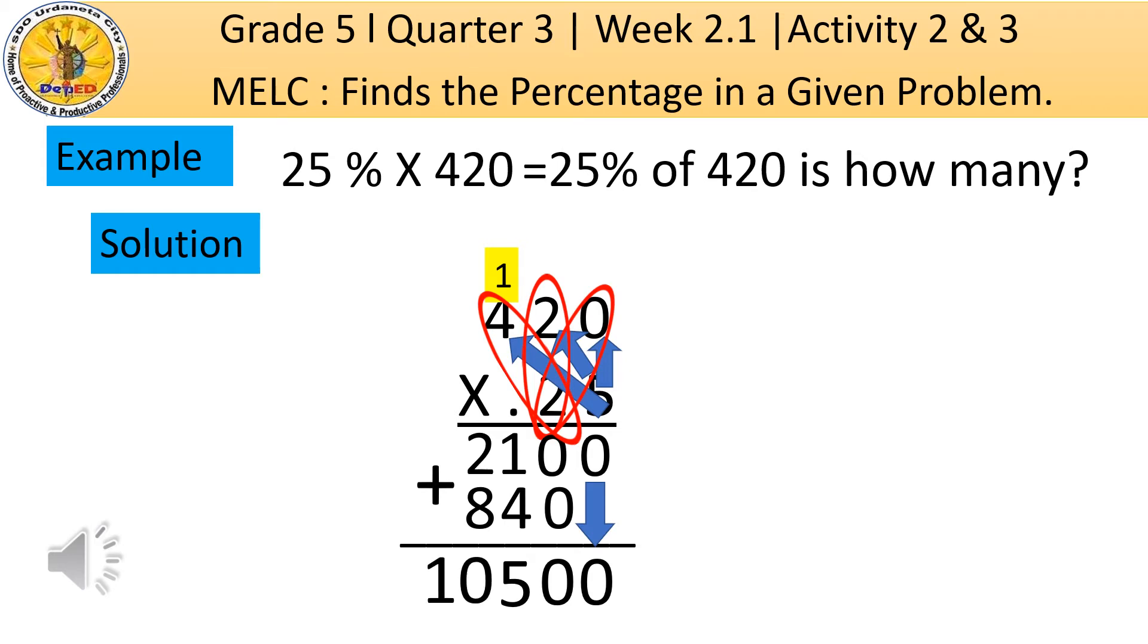Then after we get the product, let us count the decimal places from right to left. 1, 2. So there are 2 decimal places and put the decimal point. Therefore, the product of 25% of 420 is 105 pesos or 105.